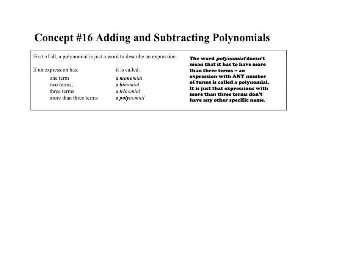Today we're starting with adding and subtracting polynomials. Many of you might be looking at that word polynomial going, oh my gosh, what does that mean? Well, a polynomial is just a word that describes an expression. There are three different types of polynomials that are more specific. We learned yesterday about terms. If we have just one term, that's called a monomial. Two terms is a binomial. Three terms is a trinomial. And if you've got more than three terms, we just use the generic word polynomial. All of these, however, are still polynomials — it's just that these have very specific names.